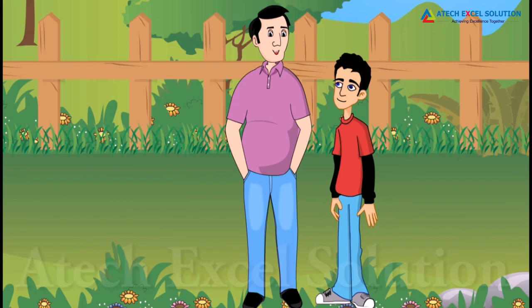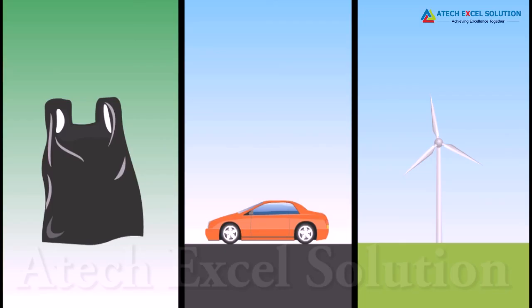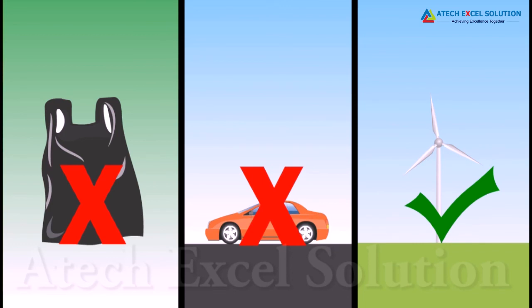Do you know we have caused great pollution in air and water? Yes. Like factories emitting smoke in the air, like disposing garbage in the seas and rivers. These have polluted the earth and the ecosystem is losing its balance. Now tell me, how can we help in reducing this pollution? Use plastics less often. Use cars less often to reduce smoke. Use pollution-free energies like wind energy. Good boy.